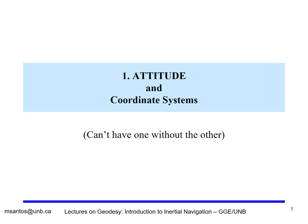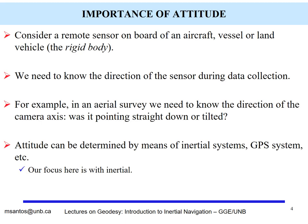Attitude is basically the description of the movement of a moving body — a moving platform. I'm going to be generic here and use the term 'moving platform' to indicate a vehicle, a boat, an airplane, or a satellite. We can only define the attitude of this moving platform if we have a coordinate system. So what is the importance of attitude?